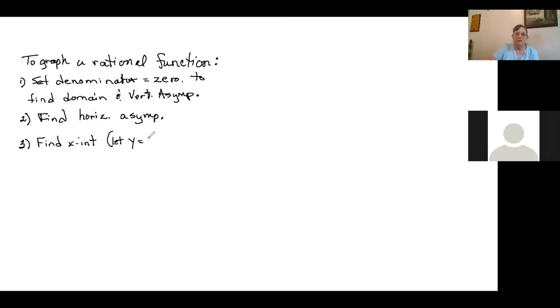When you let y equal zero, you do that by setting the numerator equal to zero, because that's the only way a fraction can equal zero. And then you can find your y-intercept by letting x equal zero.